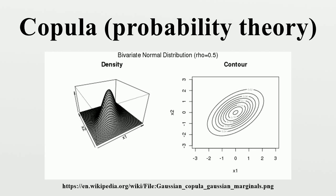Copulas are popular in high-dimensional statistical applications as they allow one to easily model and estimate the distribution of random vectors by estimating marginals and copulae separately. There are many parametric copula families available, which usually have parameters that control the strength of dependence. Some popular parametric copula models are outlined below.